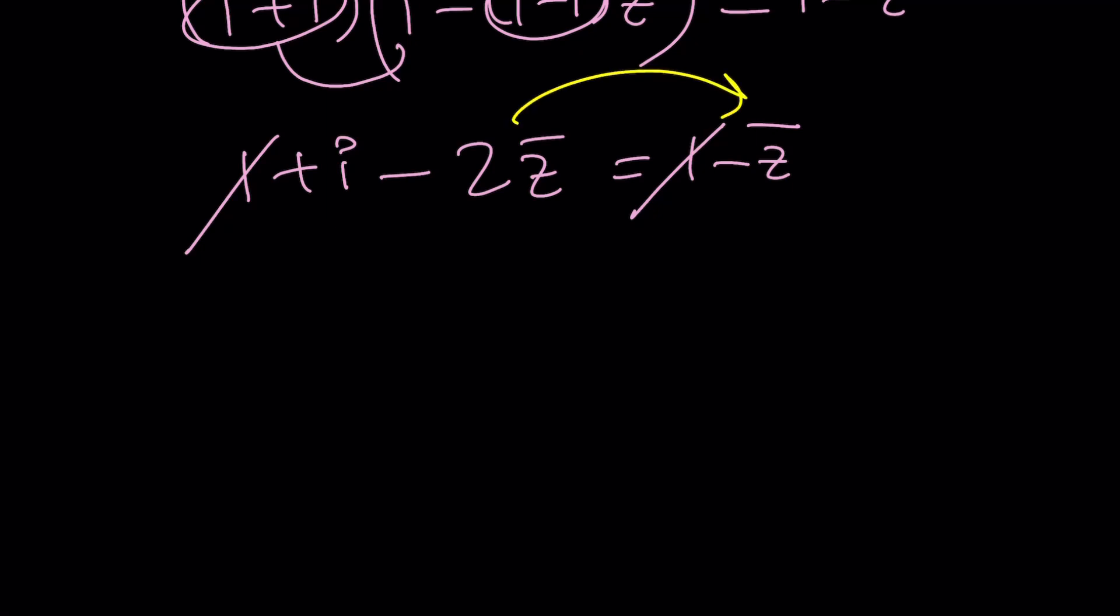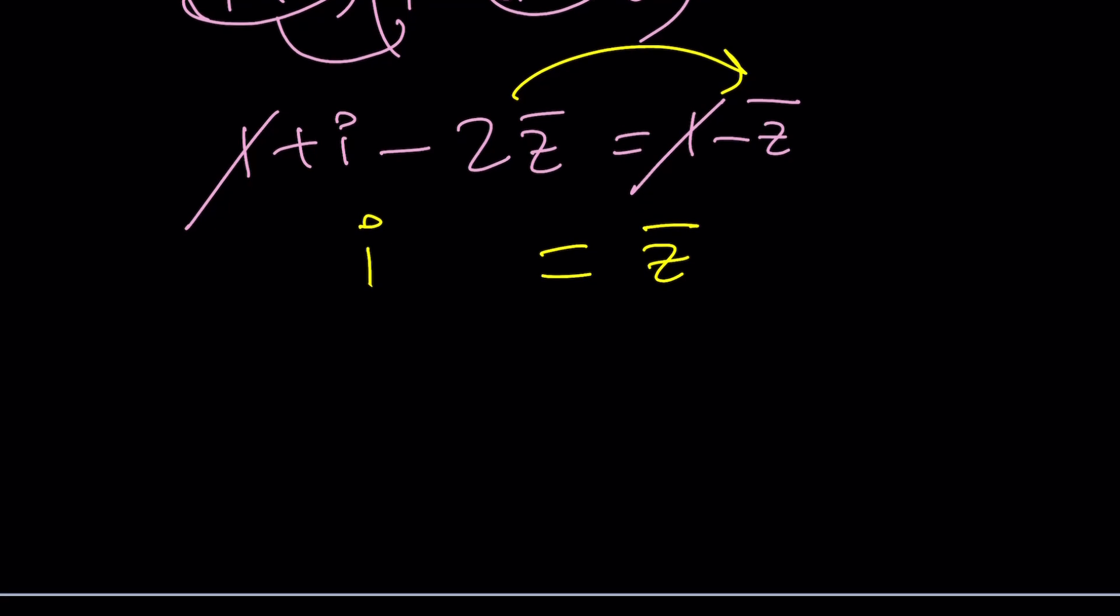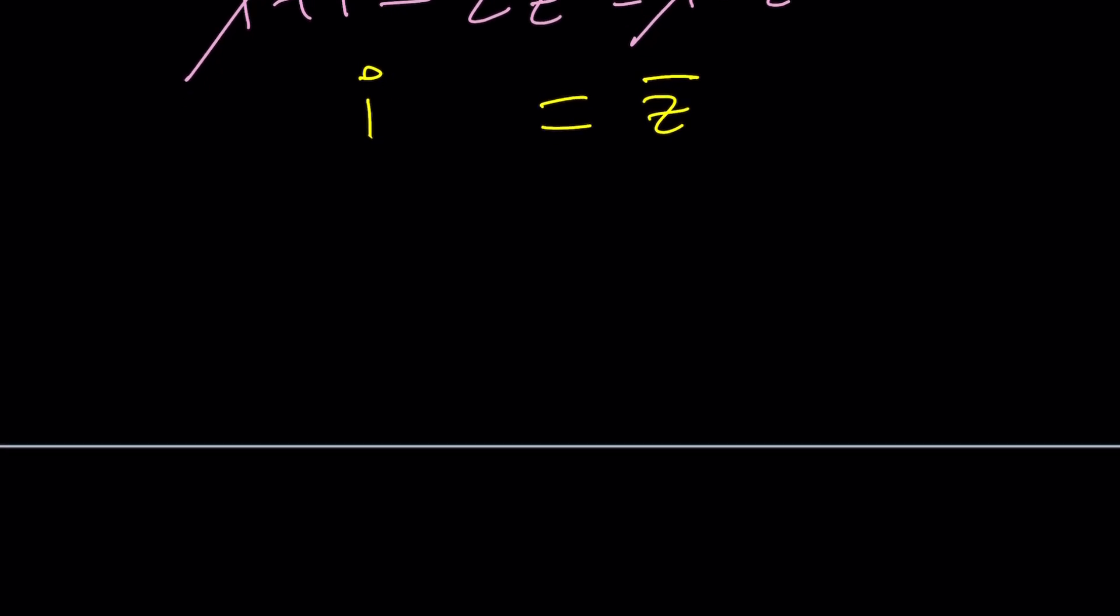Now let's go ahead and cancel out the ones and then put the Z bars together. You're going to get a Z bar here and I here. So Z bar is I, which means the conjugate of Z is I, which means Z is going to be the conjugate of the conjugate, which is the conjugate of I, which is negative I. And this gives us the same exact solution.